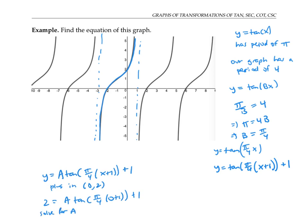Since tan of pi over four is just one, this equation simplifies to two equals a times one plus one, which means that a has to be one. So in fact, this equation here is our final answer for this graph.